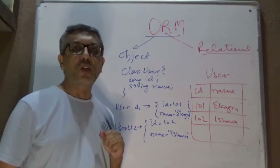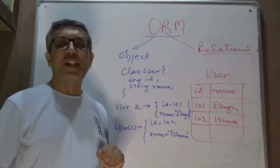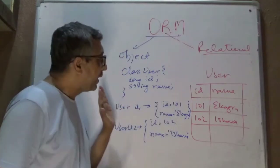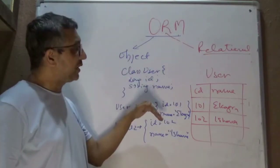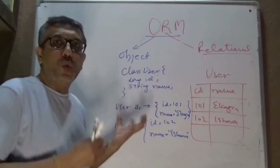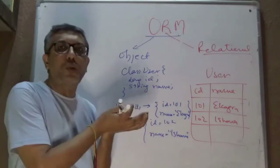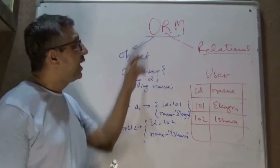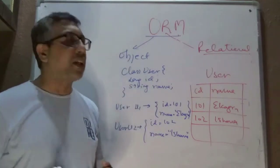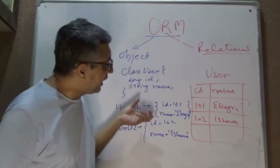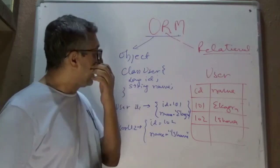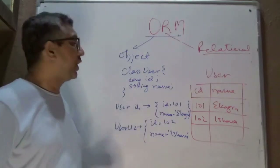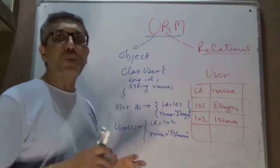You can do operations on this object — for example, change the name — and then persist it. When you persist it, you have a handle to your object, but you want an update query to go to the database. That's where object-relational mapping comes into picture — it takes care of converting the object into the right SQL and persisting it to the database.